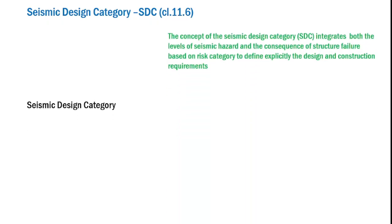The concept of a seismic design category, popularly known as SDC, integrates both the levels of seismic hazard and the consequence of a structure's failure based on risk category to explicitly define design and construction requirements. So the definition of SDC considers two things: first, the seismic hazard levels at the site, and second, the risk category of the structure. These two requirements are integrated to define specific design and construction requirements for structures.